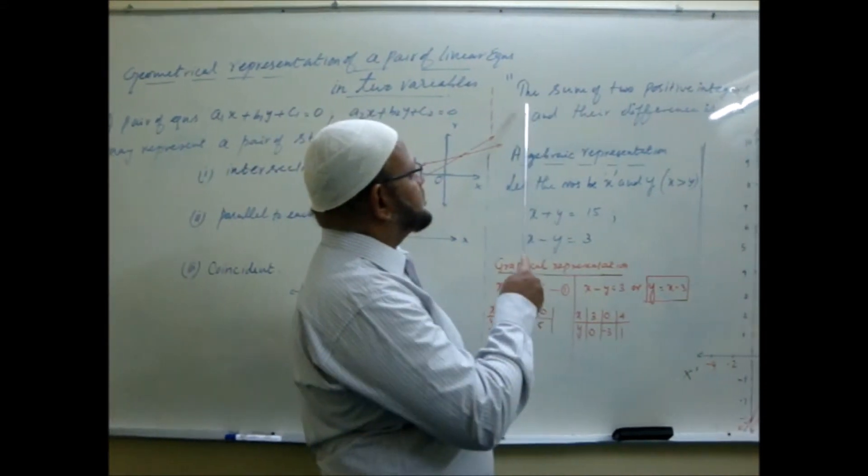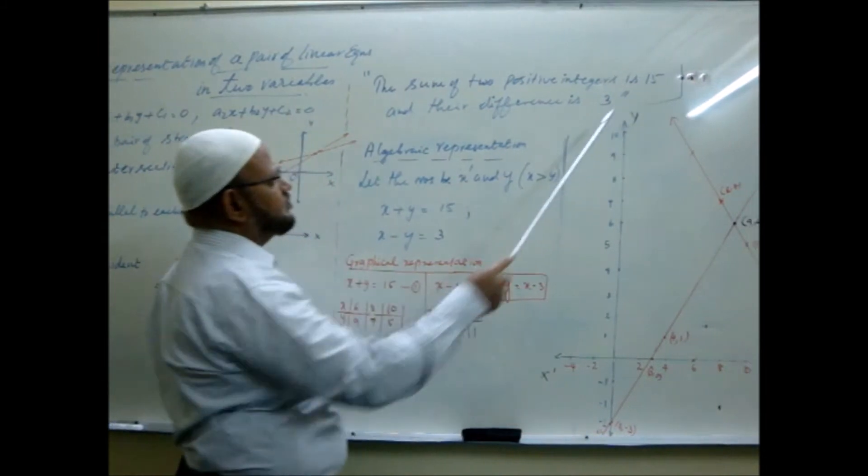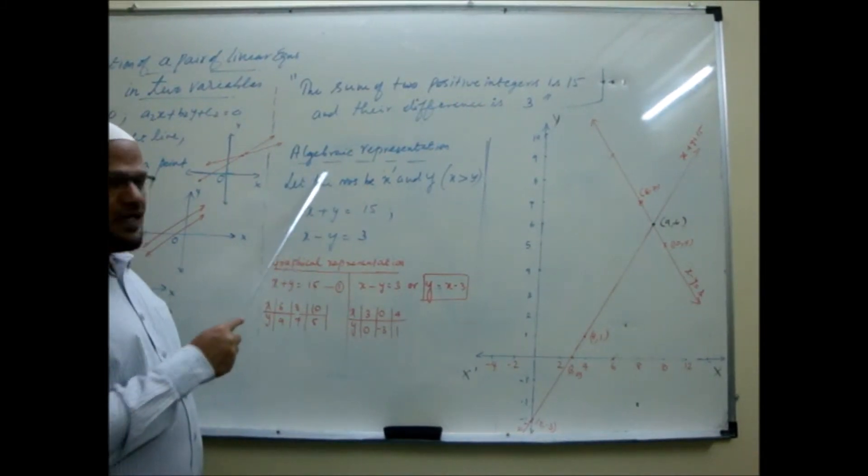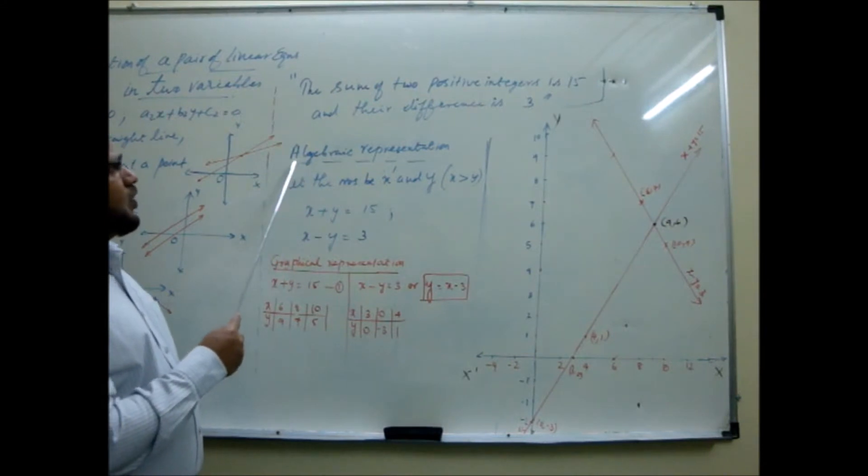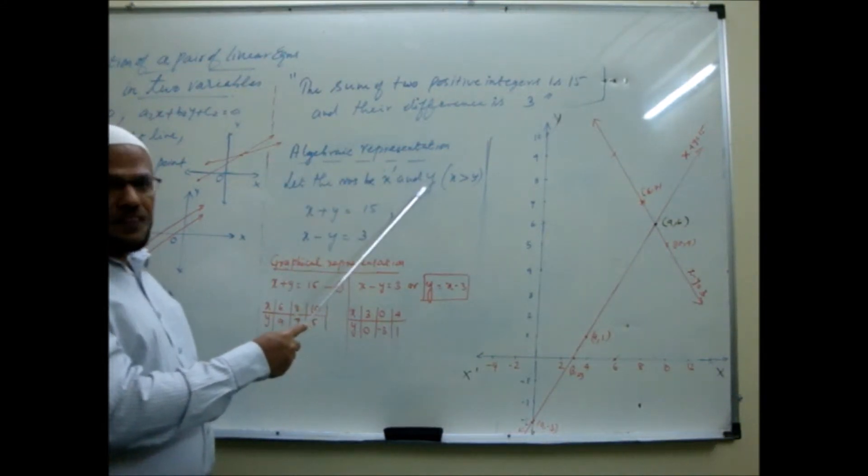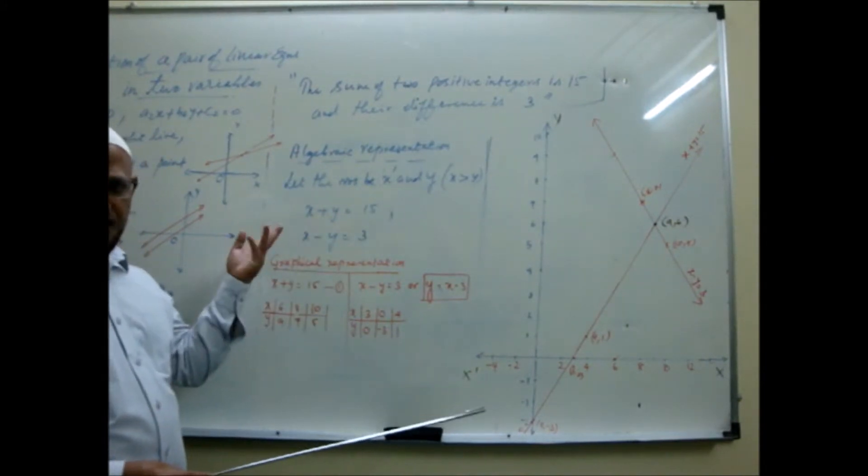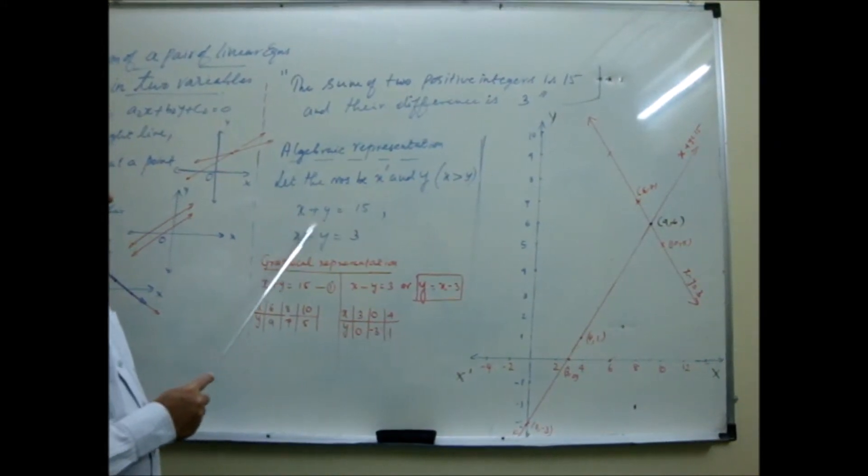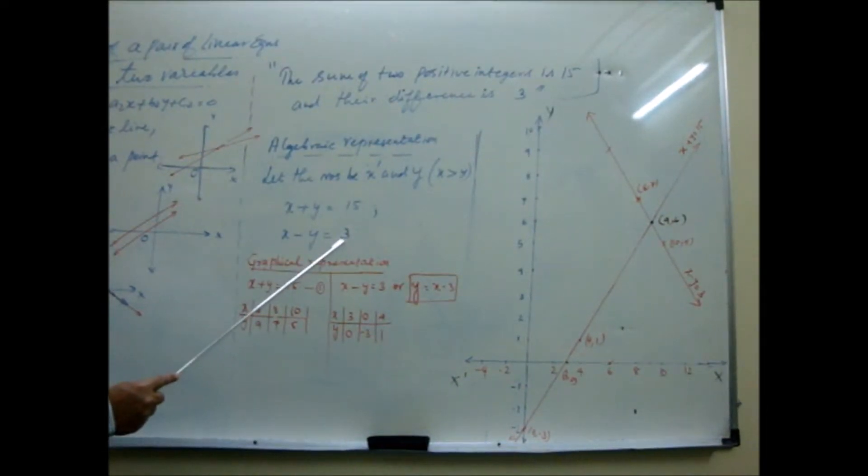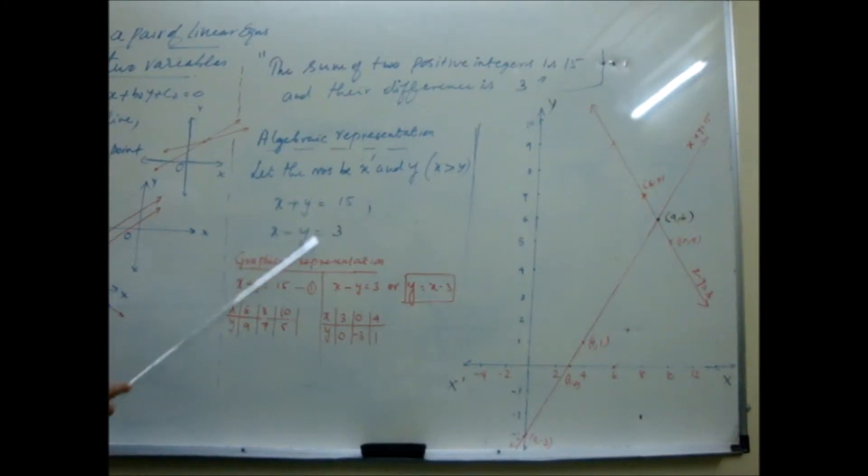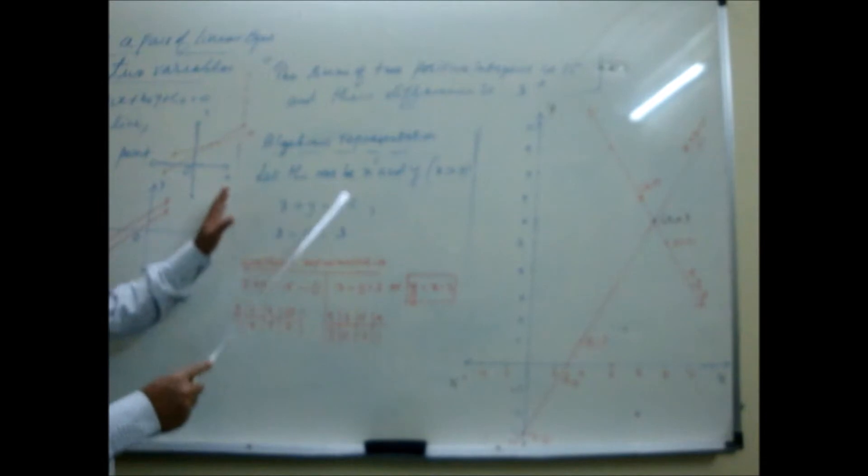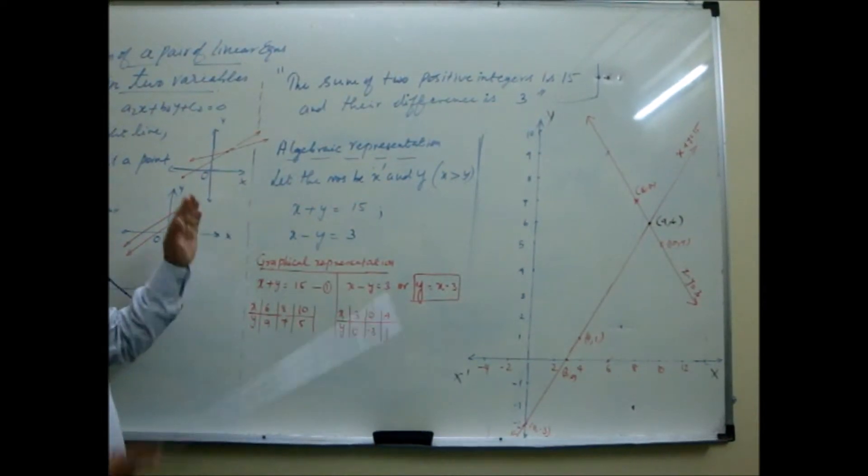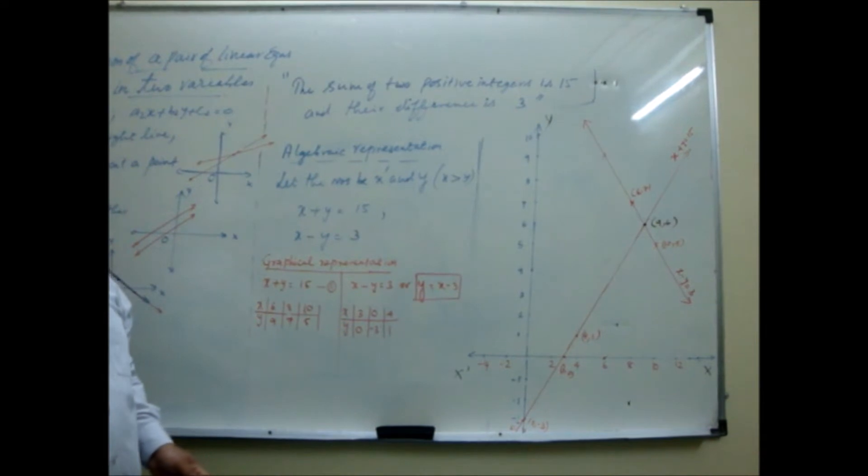The sum of two positive integers is 15 and their difference is 3. This we have discussed in the last class. What is the algebraic representation? You take, let the numbers be x and y. One of the numbers, let it be larger, other smaller. So you take x greater than y. So you wrote here x plus y is 15, sum of the two numbers. To take x minus y is 3. This is as per question. If you are expressing the situation in the form of a pair of equations, that is what called algebraically representing the problem.